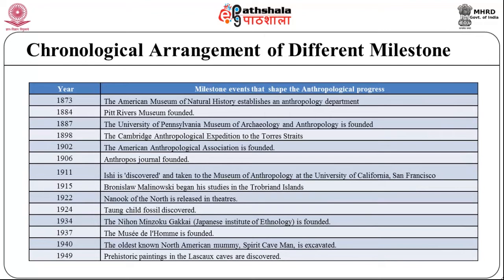As you can see in the table, a chronological arrangement of different milestone events around the world that explain anthropology as a discipline is given. The foremost milestone is in the year 1873, when the American Museum of Natural History established an anthropology department. In 1884, the Pitt Rivers Museum was founded. In 1887, the University of Pennsylvania Museum of Archaeology and Anthropology was founded. In 1898, the Cambridge Anthropological Expedition to the Torres Straits took place. In 1902, the American Anthropological Association was founded, and in 1906, the journal Anthropos was founded.